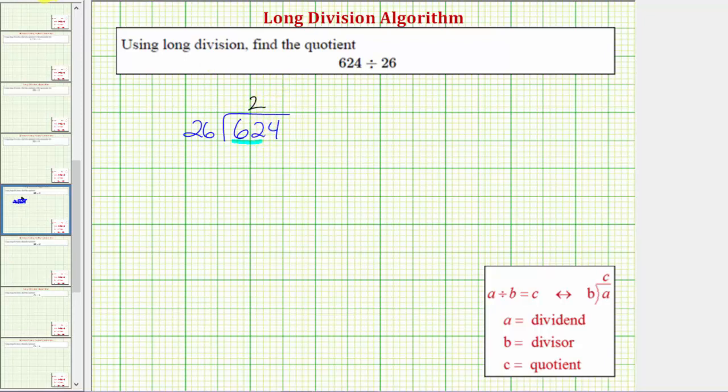Another way to approach this would be to write some products involving 26. For example, we know that 1 times 26 equals 26, and 2 times 26 would be 26 plus 26, or 52. If we tried 3 times 26, that would be 52 plus 26, which would be 78.